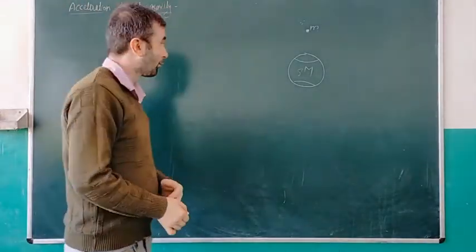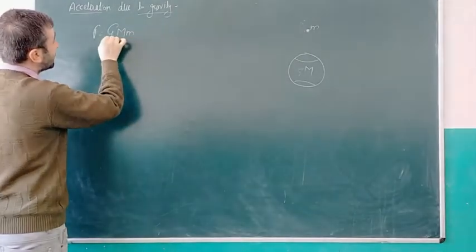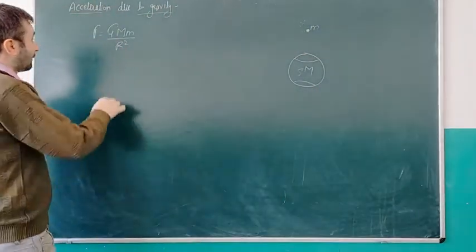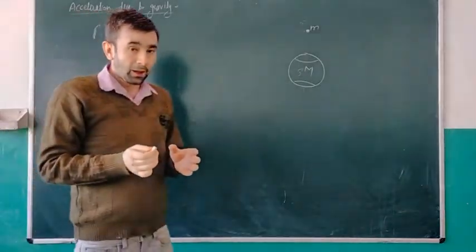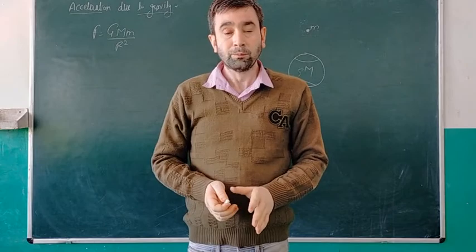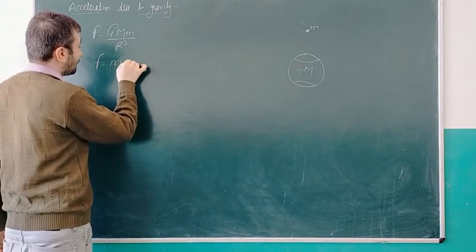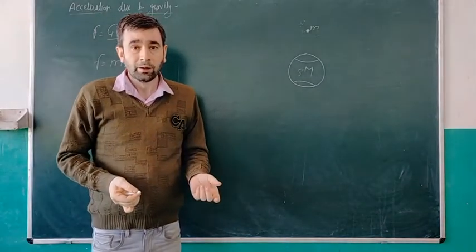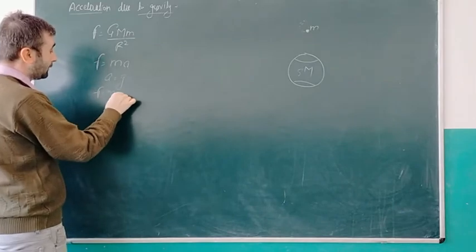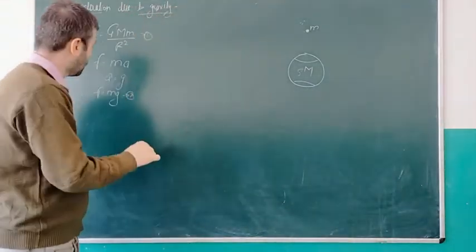According to Newton's second law, the rate of change of momentum of a body is directly proportional to the force. Force is equal to mass into the acceleration. F equals ma. When we consider gravitational force, we have the gravitational force equation. So this is the equation, and we can equate these two equations.